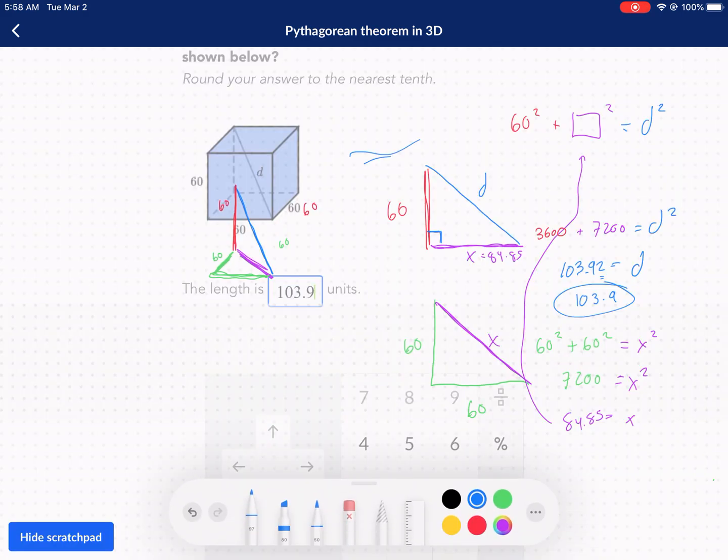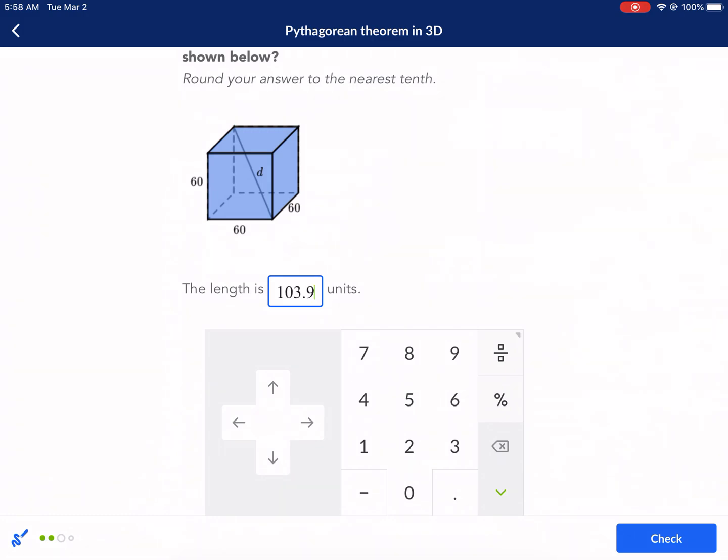So just a reminder, because of this odd shape, we had to do the Pythagorean theorem twice to find that diagonal in the cube, and it's 103.9.